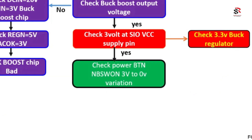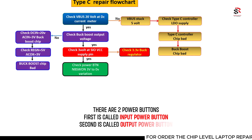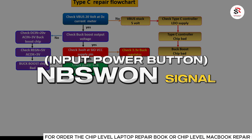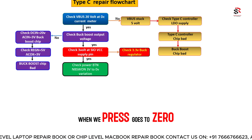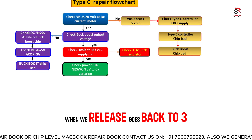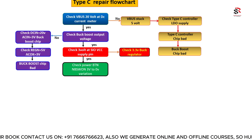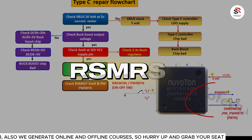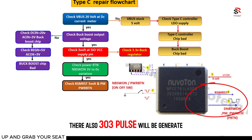If the 3.3V is present, the next thing to check is the NBS_ON signal — the power button or power switch. There are two power button signals: the input power button (NBS_ON or power switch) and the output power button. On NBS_ON you should see 3V at rest; when the power button is pressed it drops to 0V, then returns to 3V on release, creating a 3-to-0-to-3V pulse. Check this signal on the SIO, along with the RSM_RST and PM power button signals.